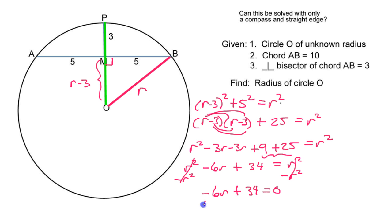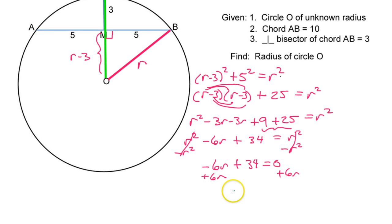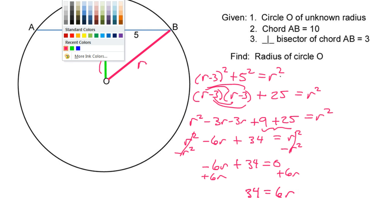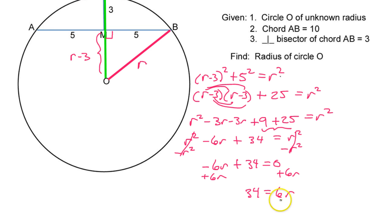To keep everything positive, I'm going to add 6R to both sides. So that's going to give me 34 is equal to 6R. So to get the radius by itself, I would divide both sides by 6.